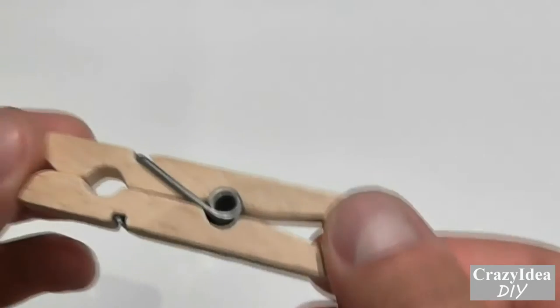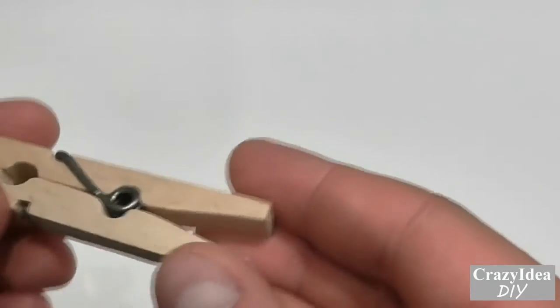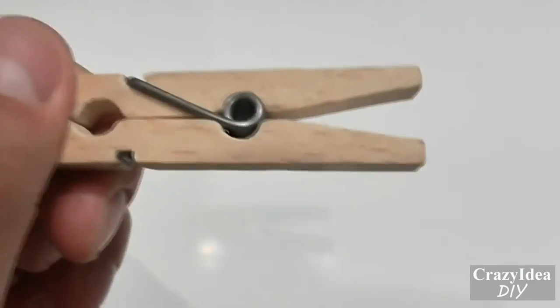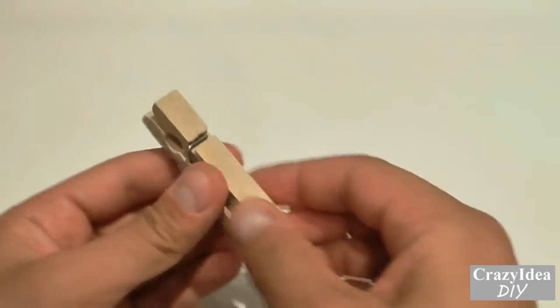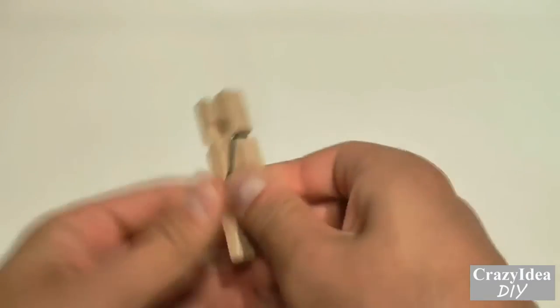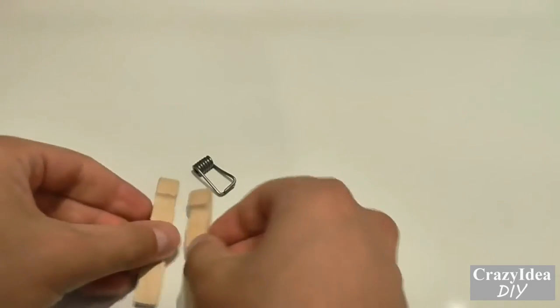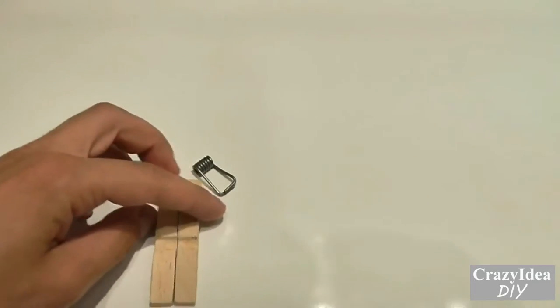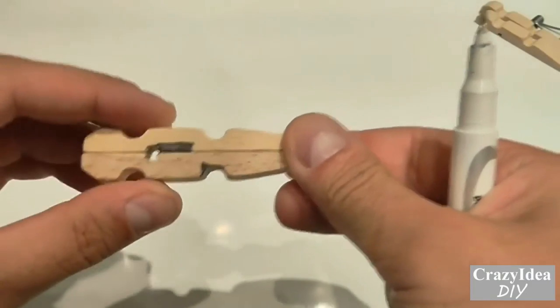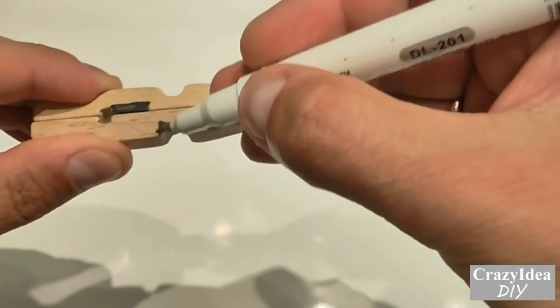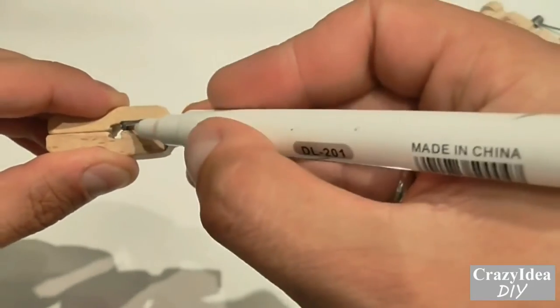Hey guys, today we will make a small gun from a regular wooden peg. Together we need to dismantle our peg first, just like that. Let's take a marker and mark an angle right here and a rectangle right here.